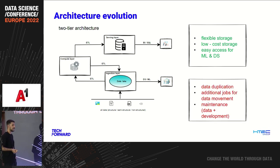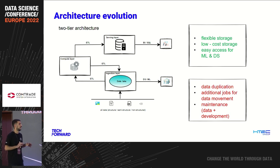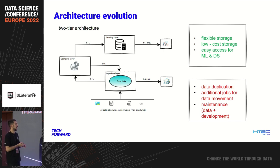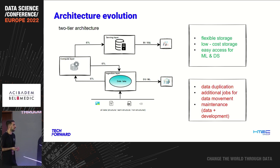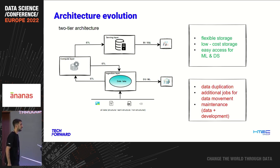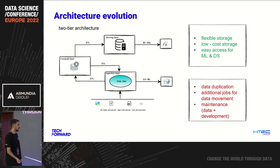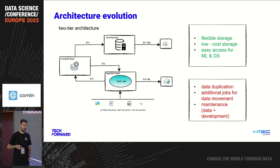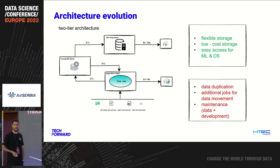What the two-tier architecture brings are flexible storage, low-cost storage, and easy access for machine learning and data science. But extra complexity comes when we want to move data outside. We take some subset of data from the data lake and move it to a reporting or serving layer. We need to maintain multiple storages and multiple schemas, which can be really painful — especially for data quality processes. And we need to maintain more jobs, extra cost, and development tasks just to make data available for different personas.